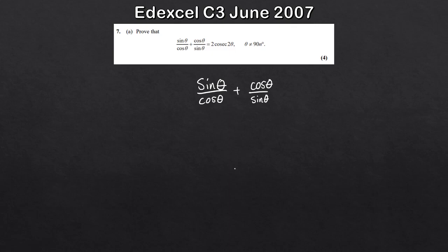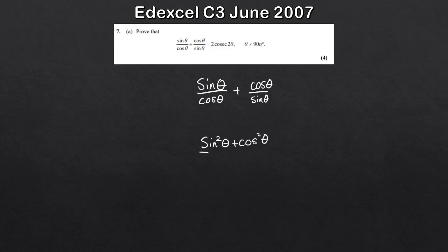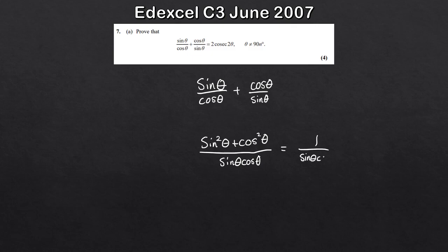Let's start with the left hand side: sinθ/cosθ plus cosθ/sinθ. You could write this in terms of tanθ and cotθ, but you won't get very far. The only other thing to do here is get it over a common denominator. So that would be sin²θ plus cos²θ all over sinθ cosθ. We know sin²θ plus cos²θ equals 1, so what we've got so far is 1 over sinθ cosθ.